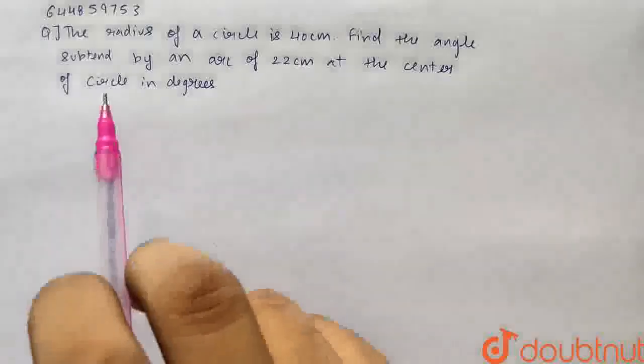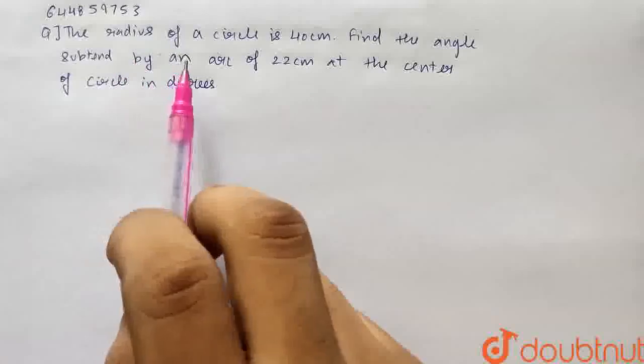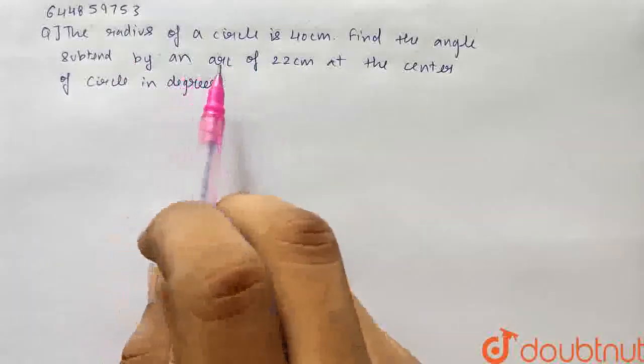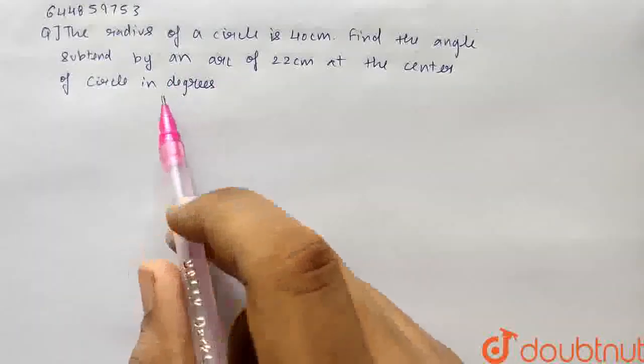Hello students, so the question for today is: the radius of a circle is given as 40 cm. We have to find the angle subtended by an arc of 22 cm at the center of the circle in degrees.